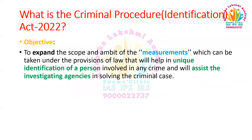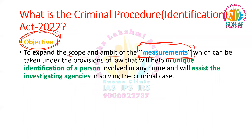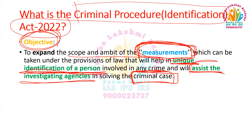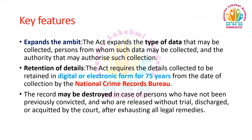The objective of the Criminal Procedure Identification Act 2022 is to expand the scope and ambit of measurements that can be collected under provisions of law, which will help in the unique identification of a person involved in any crime, and assist investigation agencies in solving criminal cases efficiently and expeditiously.